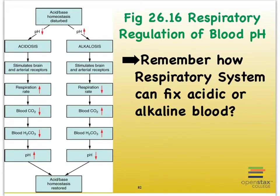The opposite is the case in order for us to fix alkalosis. So we can either blow off more carbon dioxide to get rid of too much acidity in the blood, or we can literally slow down our breathing to hold on to more carbon dioxide and therefore elevate our acidity levels if they were too low in the blood.